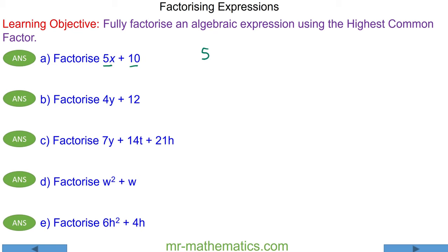We have 5x, which is a product of 5 and x, and we have 10, which is a product of 5 and 2. So you can see that 5 is a common factor of both terms. So 5 goes on the outside of the brackets. And 5 multiplied by x, add 2, would give you 5x plus 10 when you expand them out.